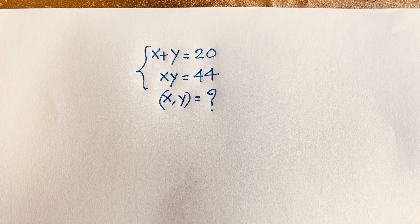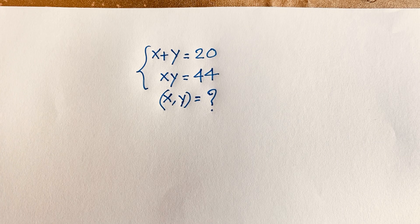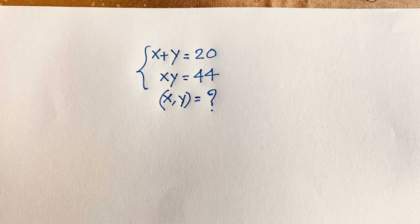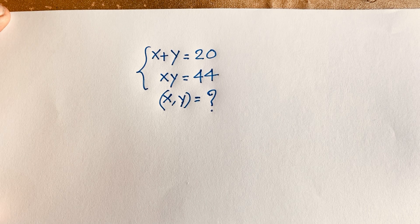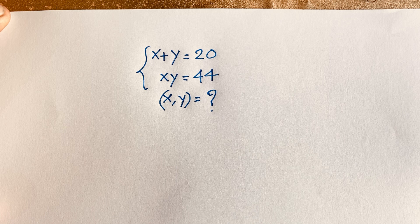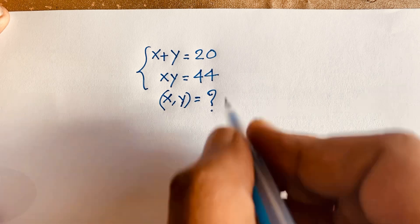Hello everyone. In this video we have solved this German Math Olympiad question. The question is: x plus y is equal to 20, x times y is equal to 44. What are x and y? How do we solve this question?